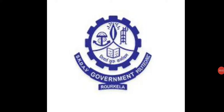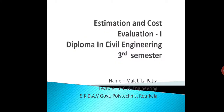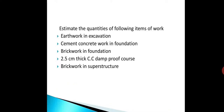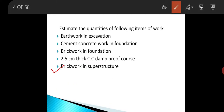Good morning. In the last class we started the deduction part of brickwork in superstructure, and we deducted various openings such as door openings, window openings, CW opening, cell, front baranda, and back baranda openings where there is no brickwork. Today we will go for the deduction of the next item, that is the lintel which is present over these openings.